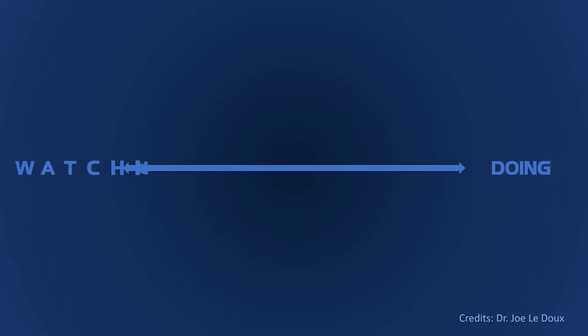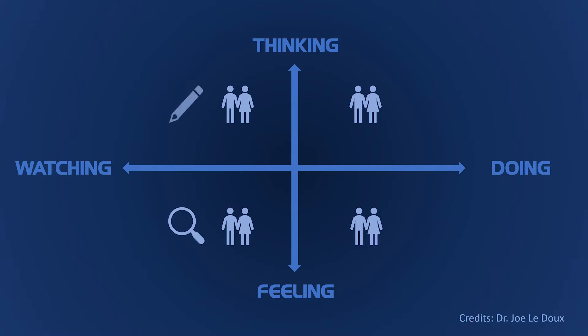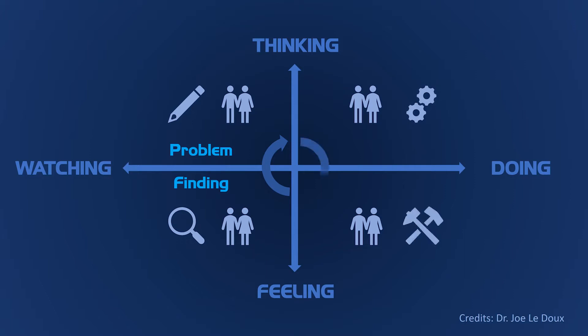A design process can be visualized using a graph with two axes. On the horizontal axis there are doing and watching. On the vertical axis there are thinking and feeling. Each quadrant represents different types of engineers. Reflectors and theorists are engaged in problem-finding processes. Pragmatists and activists are engaged in problem-solving processes. The whole cycle represents the design process, and students in BMED 2310 go through the whole cycle in a semester.